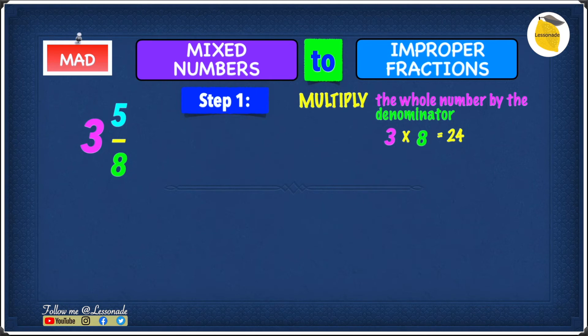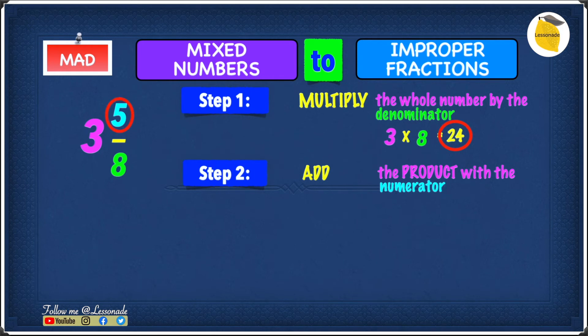So that's our product. Now, let's move into step 2. Step 2 is to add the product, which is 24, with the numerator, which is 5. So 24 is the product, with the numerator, 5. 24 plus 5 gives you 29.